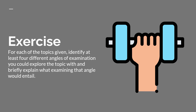Let's now complete another short writing exercise. For each of the same two topics, identify at least four different angles of examination that you could explore the topic with, and briefly explain what examining that angle would look like.